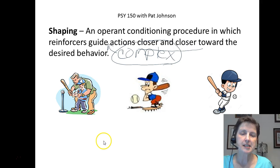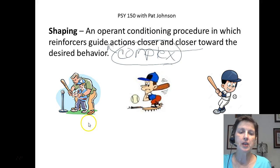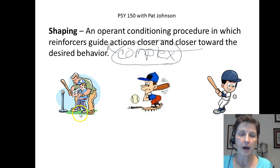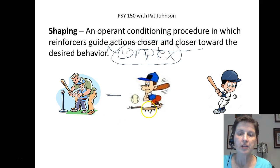Another textbook calls this successive approximations to the target behavior — in other words, baby steps towards what you want that subject to do. So in this case, the father is helping the little kid and showing him how to hold the bat. They're going to start out with t-ball, and maybe even the father will help the kid hit the t-ball the first few times.